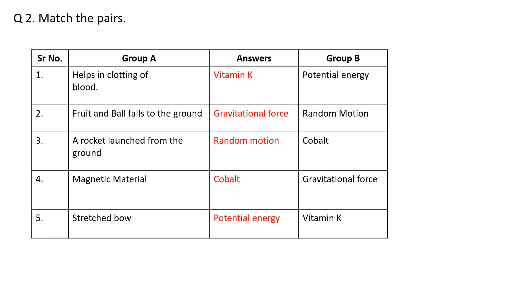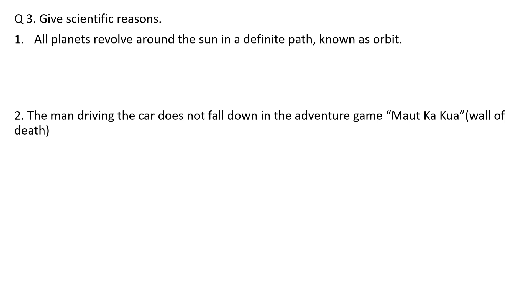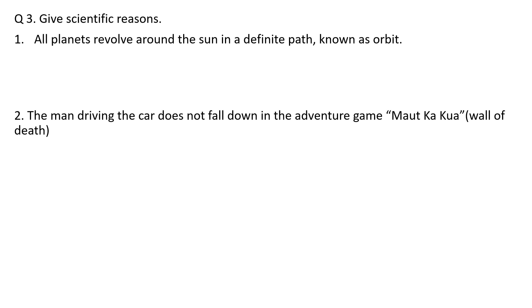Fifth: Stretched bow, so here example is potential energy. Question number three: Give scientific reasons. First: Why do all planets revolve around the sun in a definite path known as an orbit?